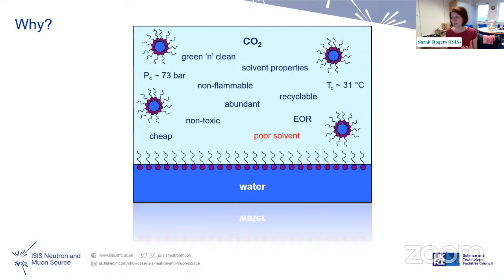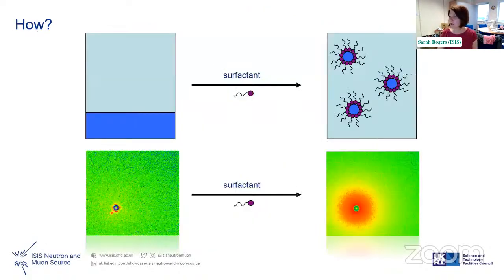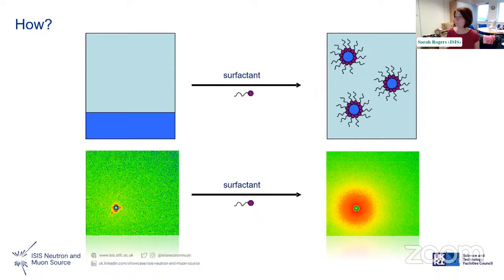Typical surfactants used in the lab don't work in CO2. So the group has spent a lot of time designing bespoke molecules that self-assemble into these structures and allow encapsulation of water in their cores. We use a bespoke pressure cell, pressurize the CO2, and inject water and surfactant. We use heavy water — D2O — because there's a very clear scattering signal from D2O distinct from CO2, allowing us to see if water nanopools are actually forming.